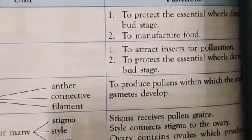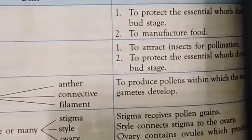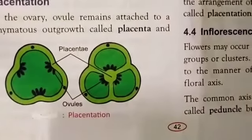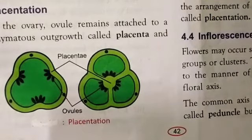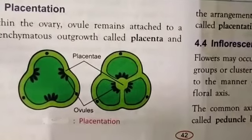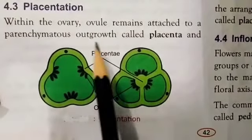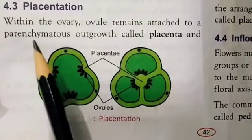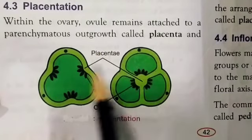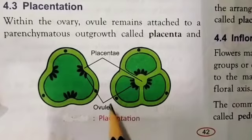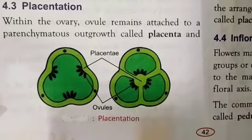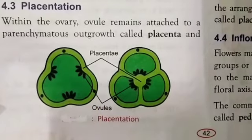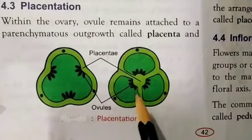There is one important term: placentation. Placentation means the arrangement of the ovules within the ovary. Within the ovary, ovules remain attached to a meristematic outgrowth called the placenta. As you can see in this diagram, these are the ovules attached to the outgrowth called placenta. This arrangement of the placenta within the ovary is called placentation.